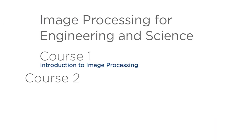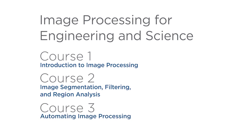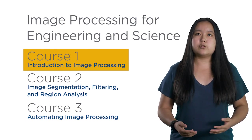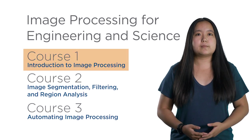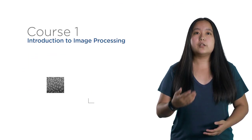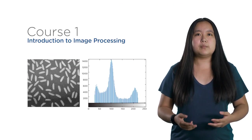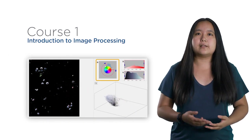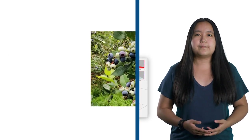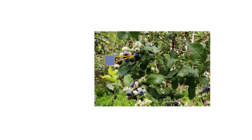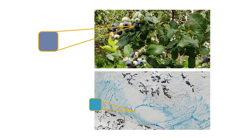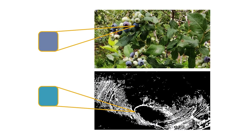The specialization is divided into three courses. In course one, you'll gain a solid introduction to working with digital images. You'll learn how to create common image adjustments and how to isolate regions of interest for further analysis. For example, you'll use color information to identify ripe blueberries, and calculate the amount of glacial melting from satellite images.